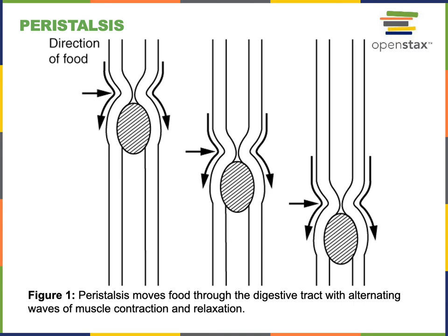Peristalsis is a wave of contraction and relaxation of the smooth muscle in the wall of the gastrointestinal tract, or alimentary canal. Peristalsis propels a bolus through the esophagus during deglutition, then propels the contents through the stomach into the small intestine, down through the small intestine into the large intestine, and then through the large intestine and out during defecation.